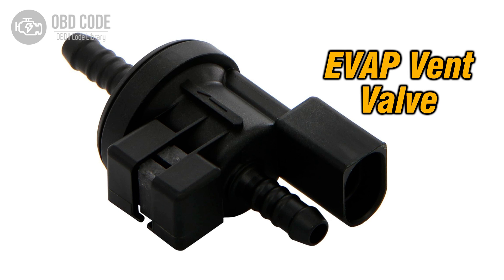The P0657 trouble code indicates an open circuit in the actuator supply voltage A circuit. This circuit supplies power to various actuators, such as solenoids or motors, controlled by the engine control module (ECM) or powertrain control module (PCM). If the ECM or PCM detects an open circuit in this voltage supply circuit, it will trigger this trouble code.